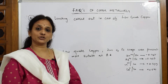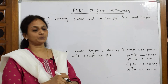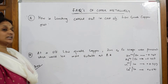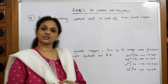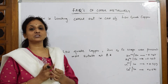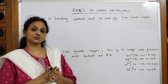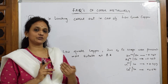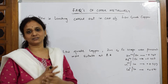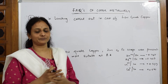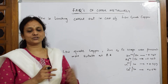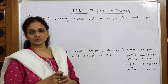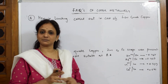Let us see the next FAQ question asked in copper metallurgy. How is leaching carried out in case of low-grade copper ores? Low-grade copper ores are those which are extracted from the earth by mining. We are going to follow the procedure and finally smelt it to get the particular copper metal. So, this is also extracted from the earth's crust by mining.